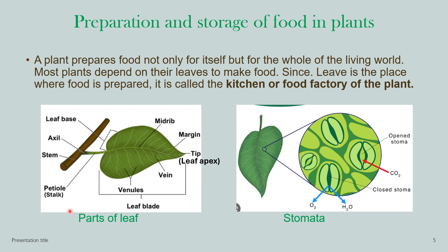The underside of the leaf has many small pores called stomata. This is a magnified picture of stomata — you cannot see them with the naked eye. A single pore is known as a stoma, and a group of stoma is known as stomata. These are very important terms to remember.